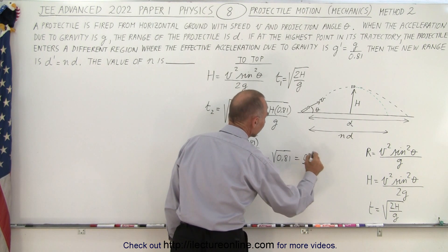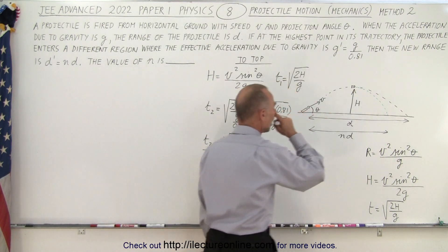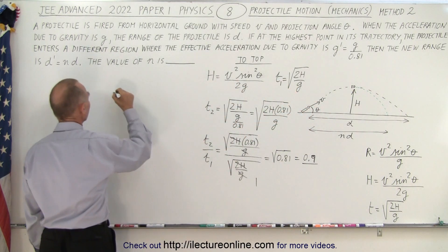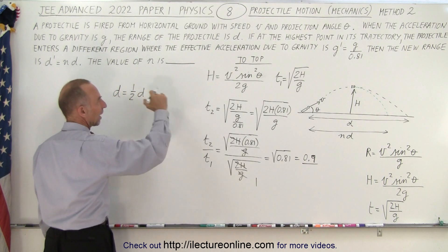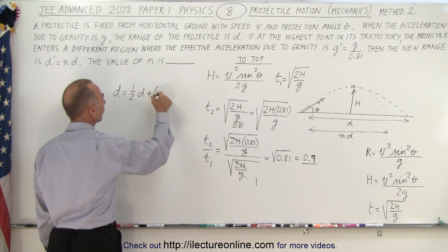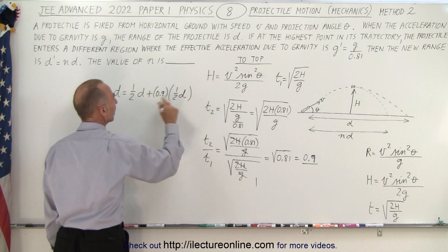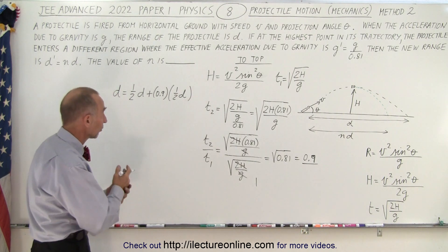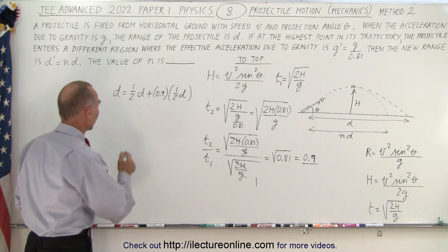Which means it only took 90% of the time to reach the ground again compared to the time that it took to go up. So therefore we can now say that the distance is going to be 0.5d for the first half of the trip, plus 0.9 times 0.5d for the second half of the trip. Why 0.9? Because you only get 9 tenths of the time before you hit the ground again on the second half.